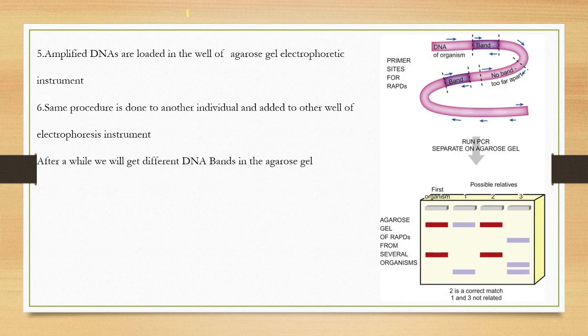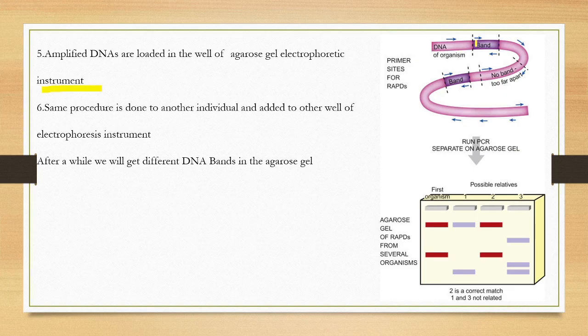The amplified DNA is then loaded into the wells of an agarose gel electrophoresis instrument, similar to the RFLP technique, and the DNA segments are separated by electrophoresis.